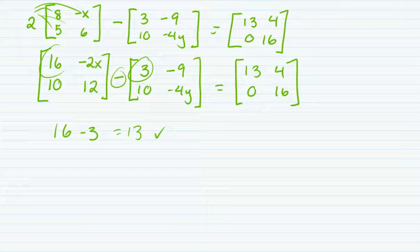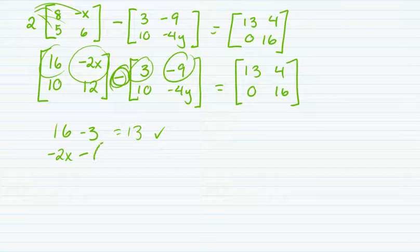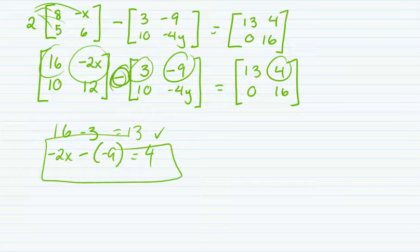Then I'm going to deal with my top right, negative 2x minus negative 9, use parentheses, equals 4. So that's how I'm going to solve for x, by setting that up.